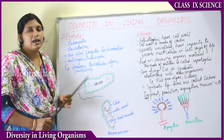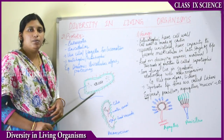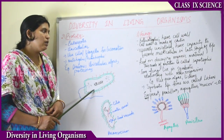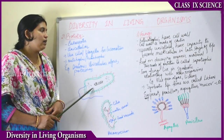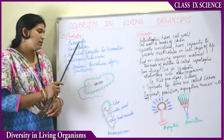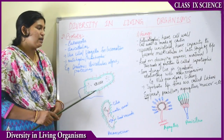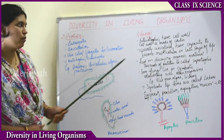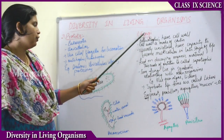Amoeba comes as an example under Monera. This is a unicellular organism which also comes under Protista. Moving on to Fungi.